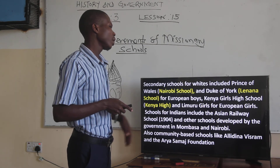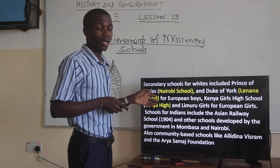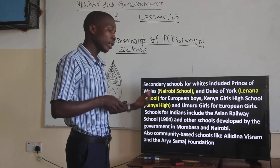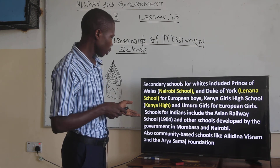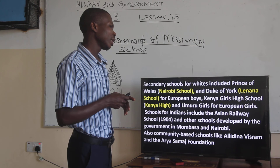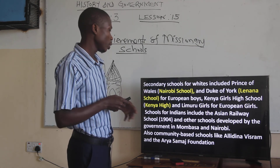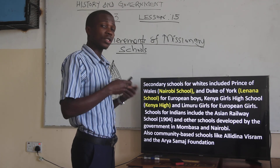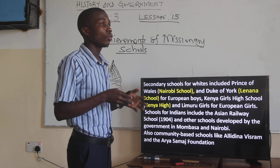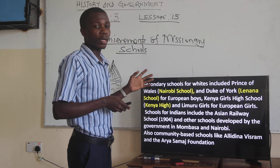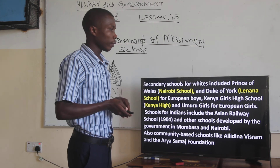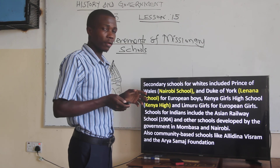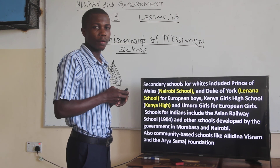Schools for Indians included the Asian Railway School, which was for Asians. Other schools developed by the Asian community included government schools in Nairobi, and community-based schools like Alidina Visram and the Arya Samaj Foundation. These are the schools that were established by the Asian community, and many of them are still there today. That concludes the first part of this lesson.